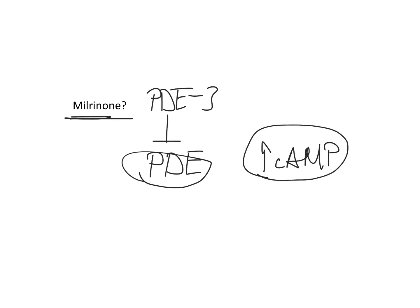What will happen if cyclic AMP increases in a smooth muscle cell? As I said before, cyclic AMP blocks myosin light chain kinase. If we block myosin light chain kinase, the smooth muscle cannot be phosphorylated and it cannot contract. So indirectly, the smooth muscle will be relaxed.